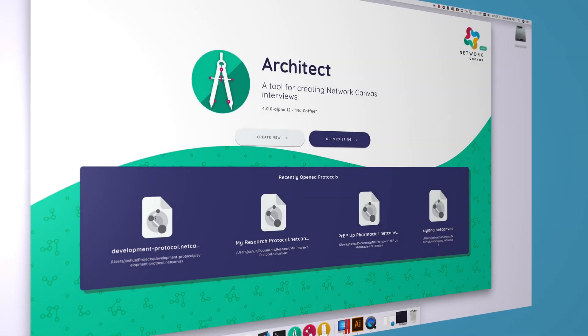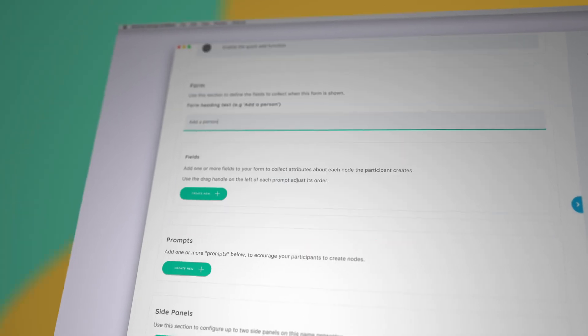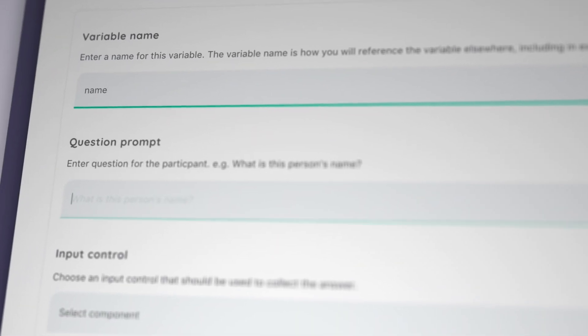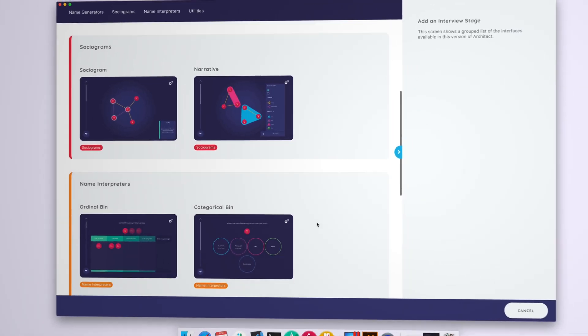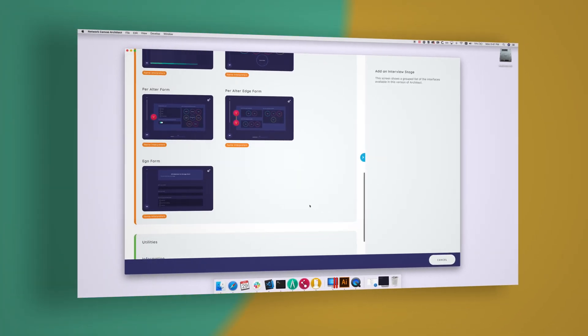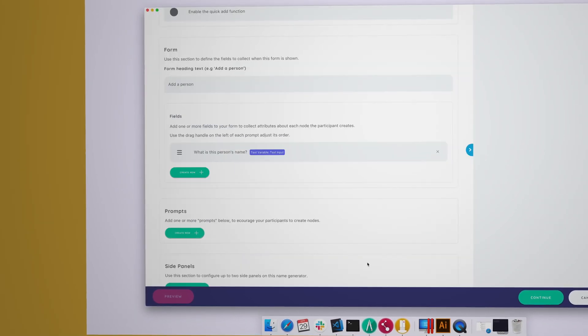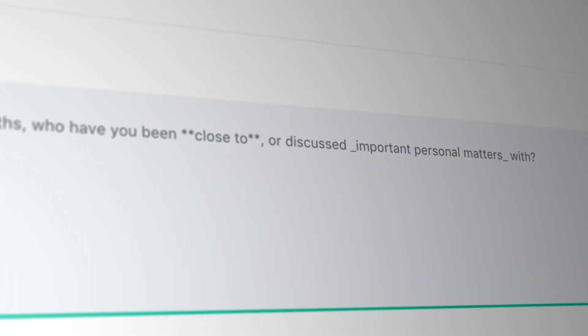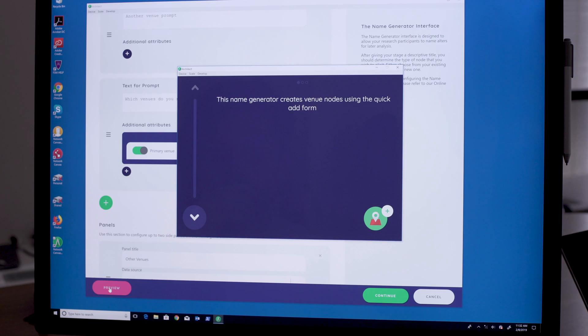Architect is where you'll design and implement your study. Here, you can easily model the nodes and edges you want to capture and create as many variables as you'll need to store their attributes. You can also define the stages of the interview by choosing one of the many tailor-made interfaces we've created and customizing its functionality to suit your needs. You can add prompts using rich text, set up special behaviors like bringing in data from an external file, and preview the experience that your participants will have right from within the app.